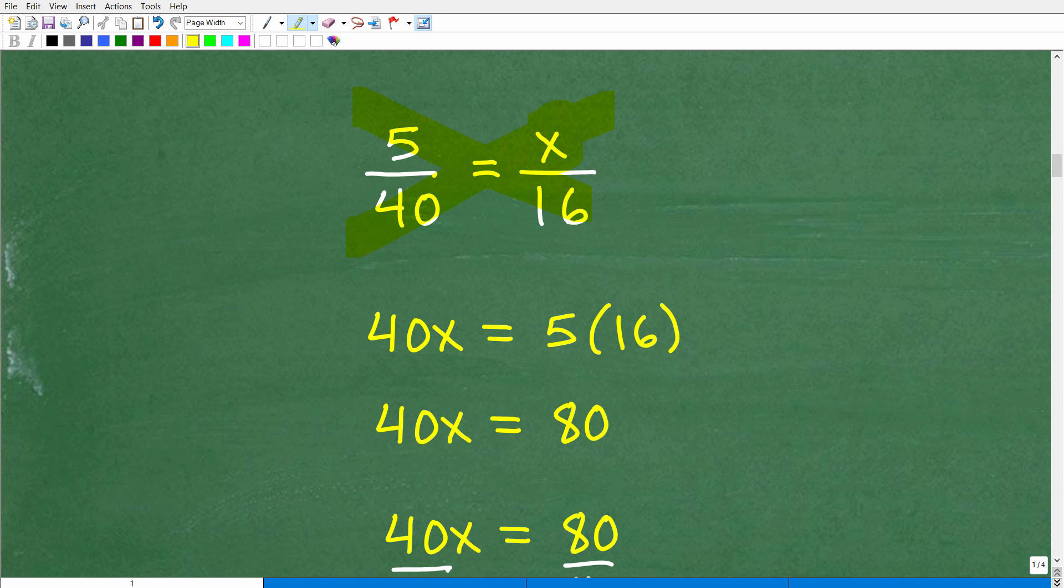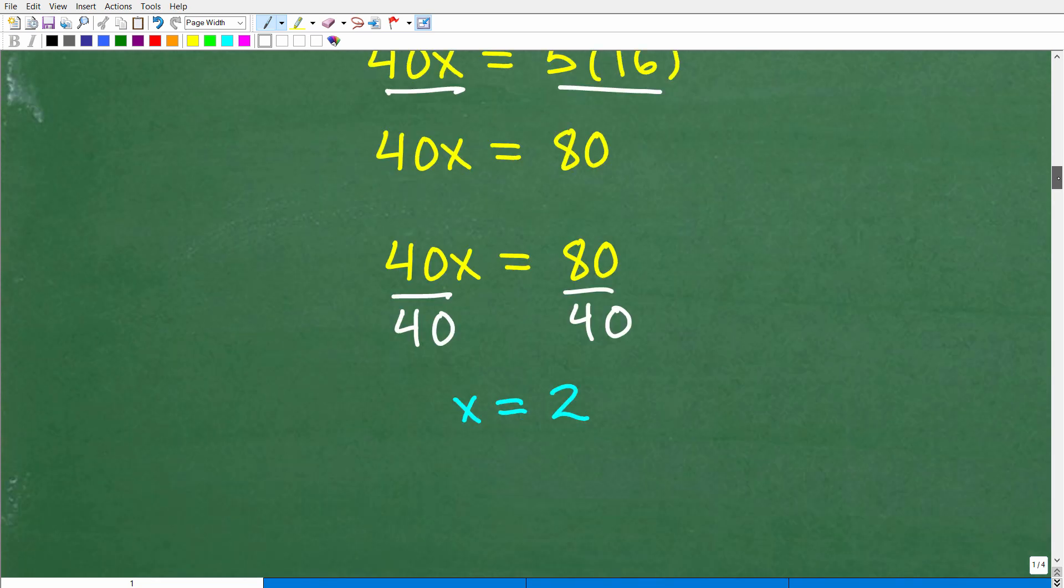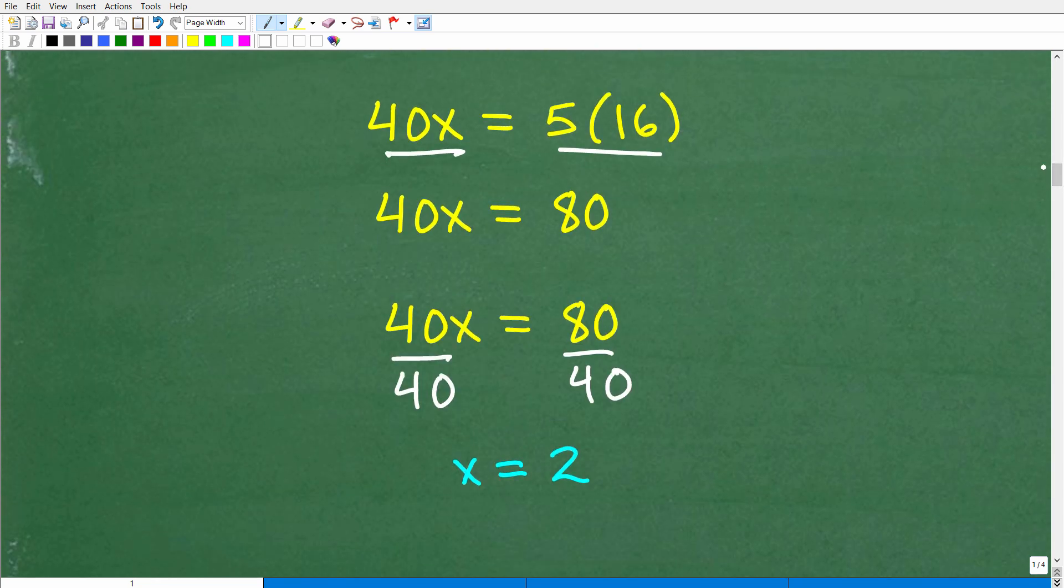So let's go ahead and use that to solve for this variable x. So what we're going to do is we're going to cross multiply. We're going to use the cross product. So 40 times x is 40x. And then 5 times 16 will be 5 times 16. So we have 40x is equal to 5 times 16, which of course is 80. So how do I solve for x when I have 40x is equal to 80? Easy. I just divide both sides of the equation by 40. And you're going to get x is equal to 2. 80 divided by 40 is 2. And that is the answer.